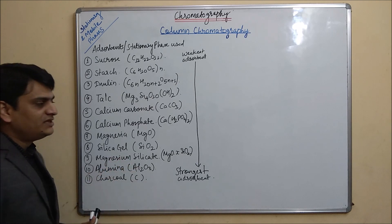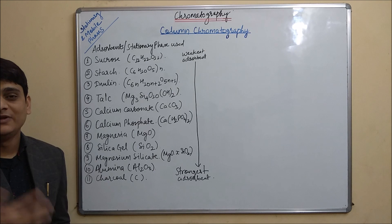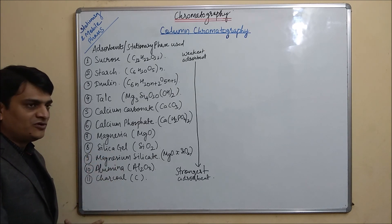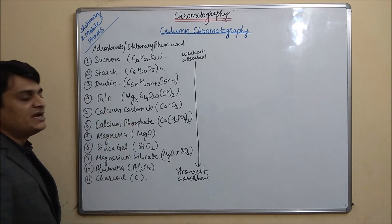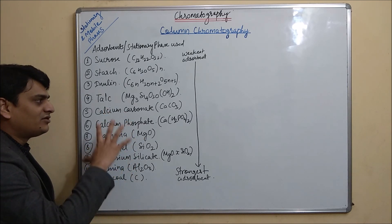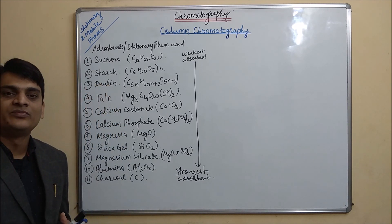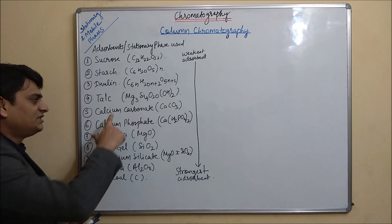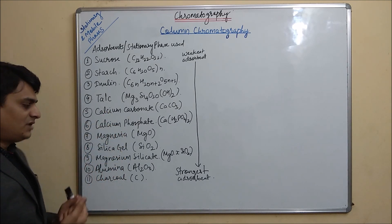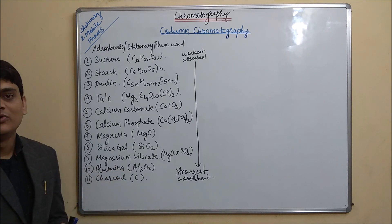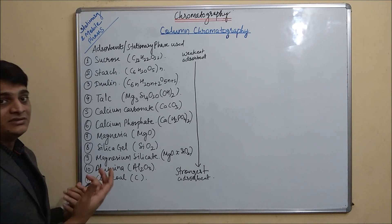All adsorbents used in column chromatography are polar in nature, which is why this is normal phase chromatography. Since adsorbents are polar, the mobile phase will be non-polar. When separation is done using these adsorbents, non-polar compounds will be separated first, because these polar stationary phases retain polar compounds. The list of compounds is given according to their affinity.